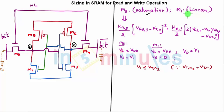So I've already written M3 in saturation, M1 in linear. We know that W by L of M3 should be less than W by L of M1, which means that kn3... I'll put it more simpler for you.